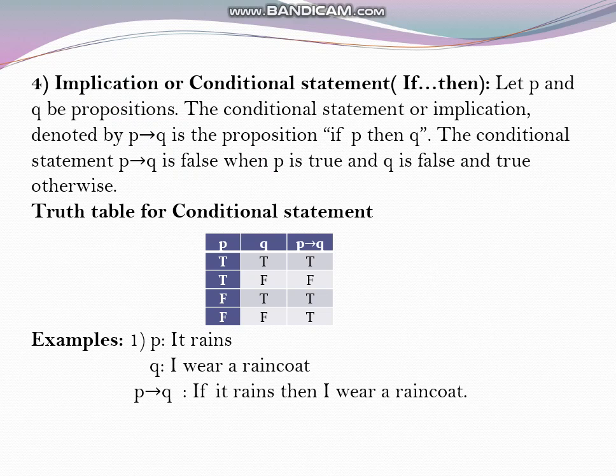The implication or conditional statement is of the type 'if...then'. Let p and q be propositions. The conditional statement or implication, denoted by p implies q, is the proposition 'if p then q' — meaning if p is true, then q will happen. The conditional statement p implies q is false when p is true and q is false, and true otherwise, since p is the condition for q to happen.